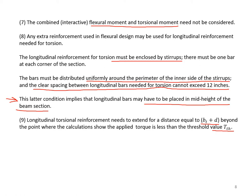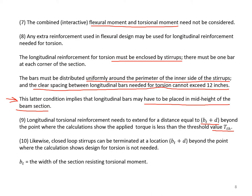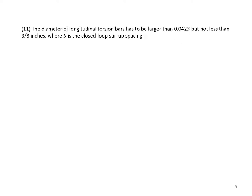Longitudinal torsion reinforcement needs to extend for a distance equal to B sub T plus d beyond the point where calculations show the applied torque is less than the threshold value T sub TH. Likewise, closed loop stirrups can be terminated at B sub T plus d beyond the point where design for torsion is no longer needed. B sub T is the width of the section resisting torsion or moment.